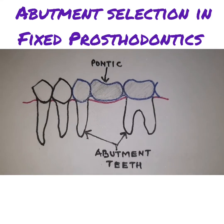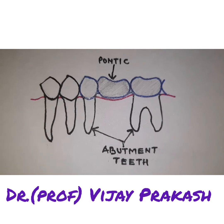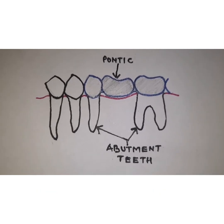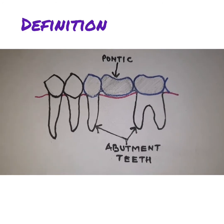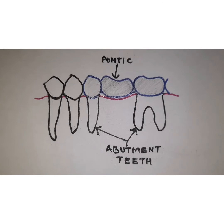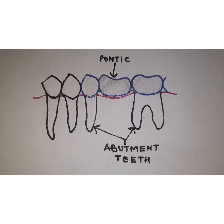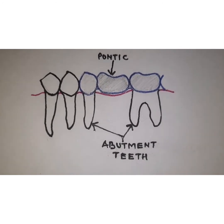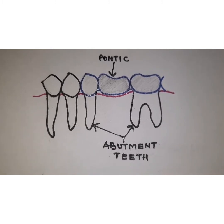Hello friends, I am Dr. Vijay Prakash and today I will be talking to you about abutment selection in fixed prosthodontics. Abutment by definition is a tooth, or a portion of the tooth, or that portion of the implant which is used for the support of the fixed or removable prosthesis. Whenever we are selecting an abutment, it is a very critical step because it is crucial for success of the fixed partial denture.